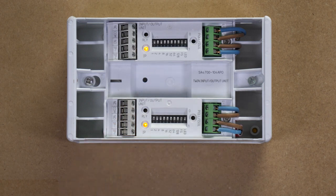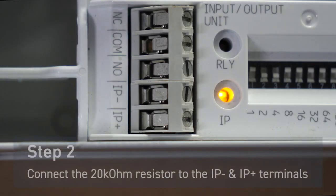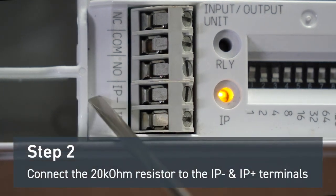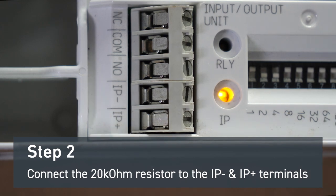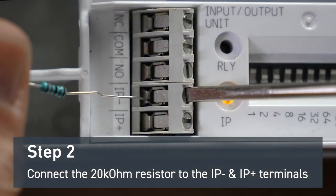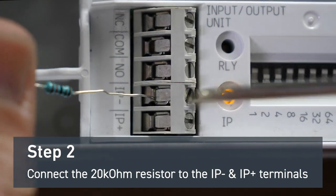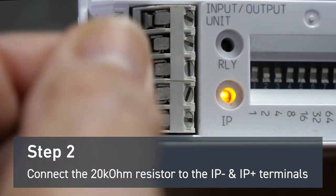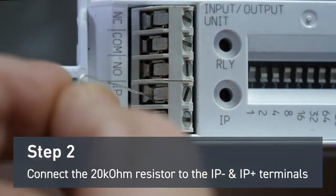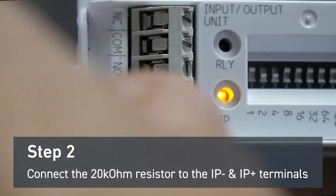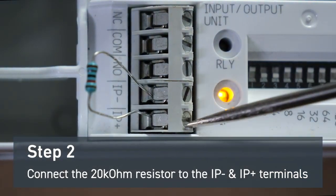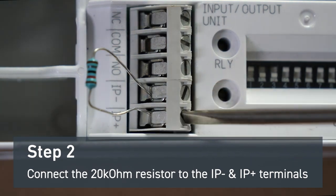If you're not using the input then it will be required to fit a 20k ohm resistor which we supply into the IP negative and IP positive connections of the unit. Once this is connected you will notice the yellow input fault light extinguish.